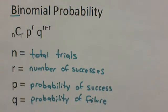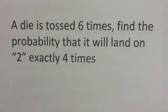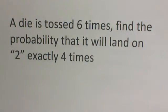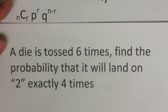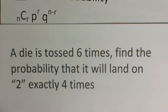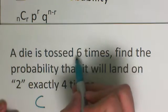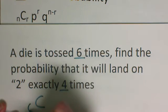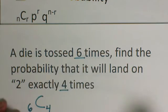So here is an example that it can be used for. A die is tossed 6 times. We're going to find the probability that it will land on 2 exactly 4 of those times. And there's our formula. So first off, we're going to write our C. We're tossing it 6 times and we want it 4 times. So the 6 is going to go where the n is. The 4 is going to go where the r is.